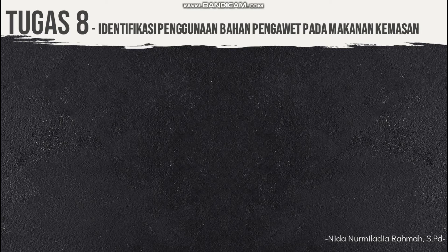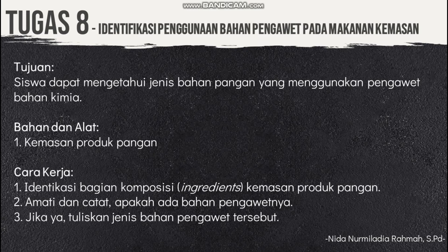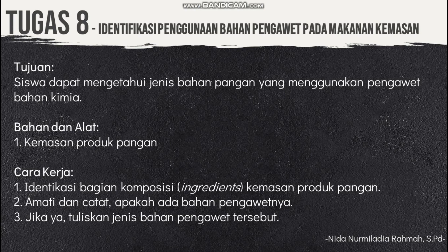Untuk tugas kali ini tentang identifikasi penggunaan bahan pengawet pada makanan kemasan. Tujuannya agar siswa bisa mengetahui jenis bahan pangan yang menggunakan pengawet bahan kimia. Caranya: cari satu kemasan produk pangan, fotokan kemasannya, lalu identifikasi bagian komposisi atau ingredients-nya. Catat ada atau tidak bahan pengawetnya, dan kalau ada tuliskan jenis bahan pengawet tersebut. Untuk pertemuan kali ini sampai sini dulu. Wassalamualaikum warahmatullahi wabarakatuh.